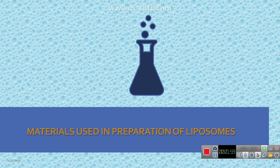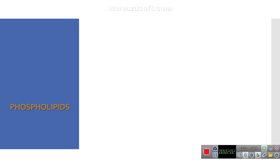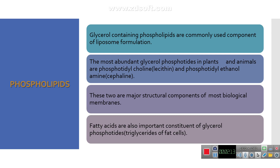There are several materials used for the preparation of liposomes, and we will study them one by one. The major part of a liposome is constituted of phospholipids — specifically glycerol-containing phospholipids, commonly used for liposome formulations. The most abundant glycerophosphatide in plants and animals is phosphatidylcholine, commonly known as lecithin. The other is phosphatidylethanolamine, commonly known as cephalin.